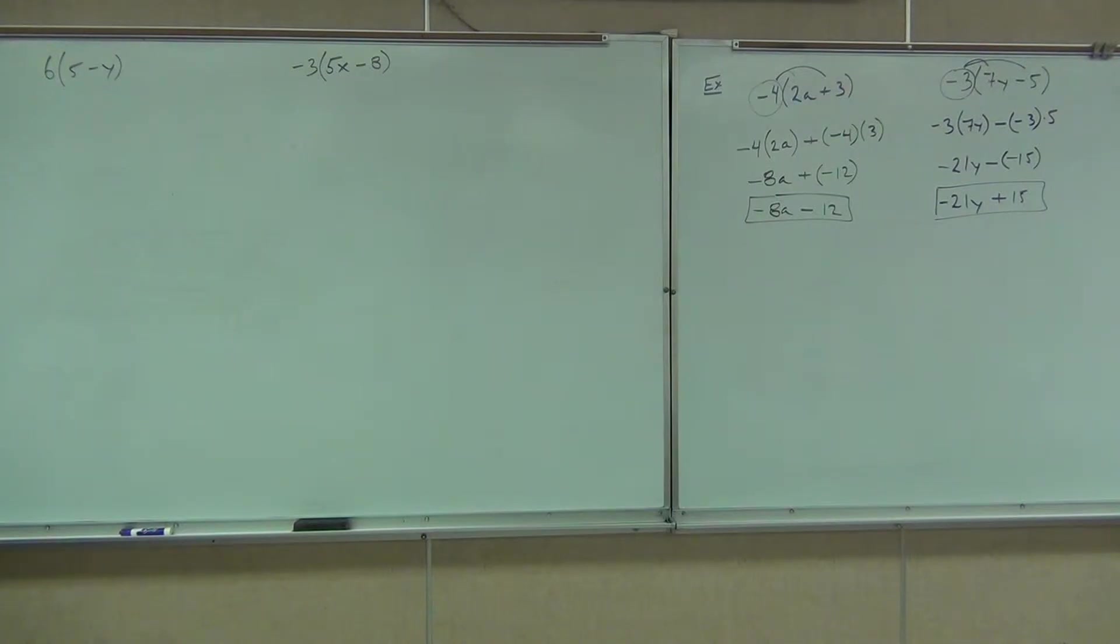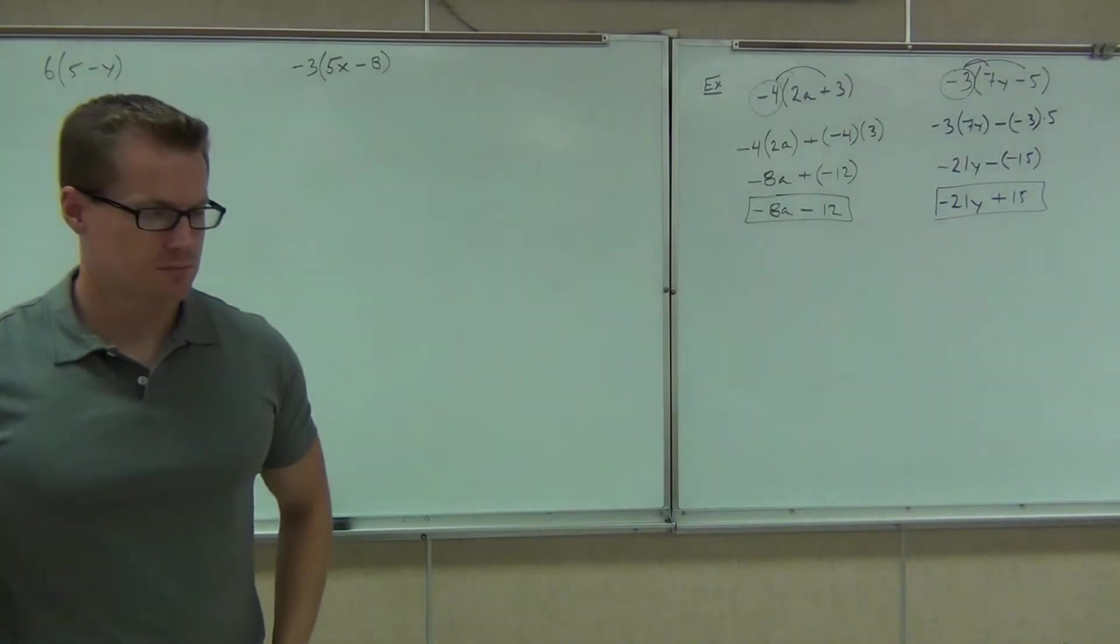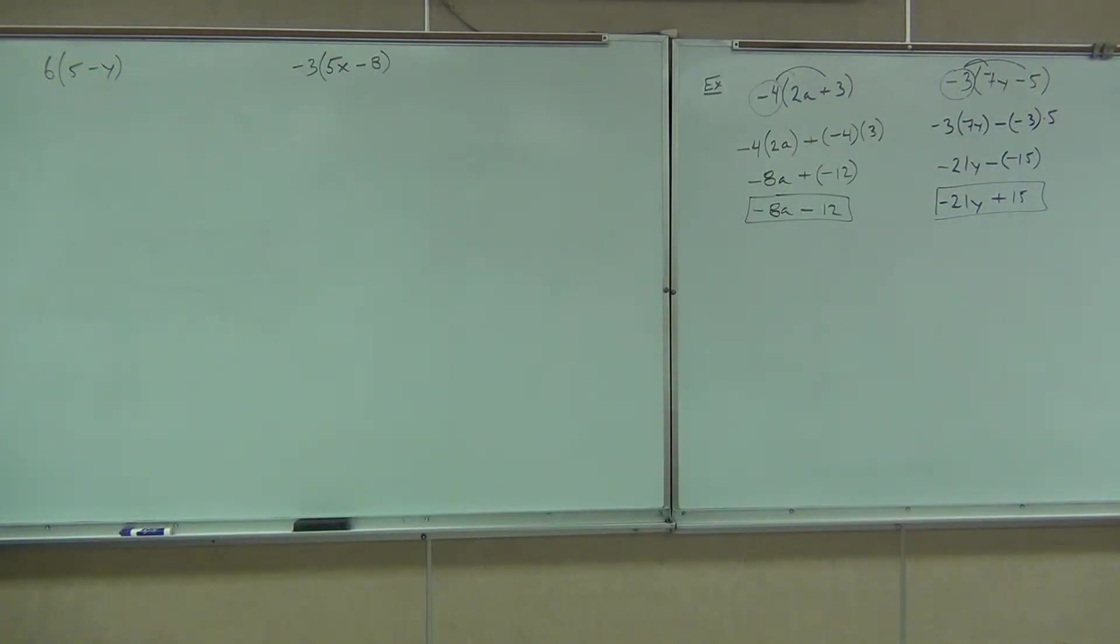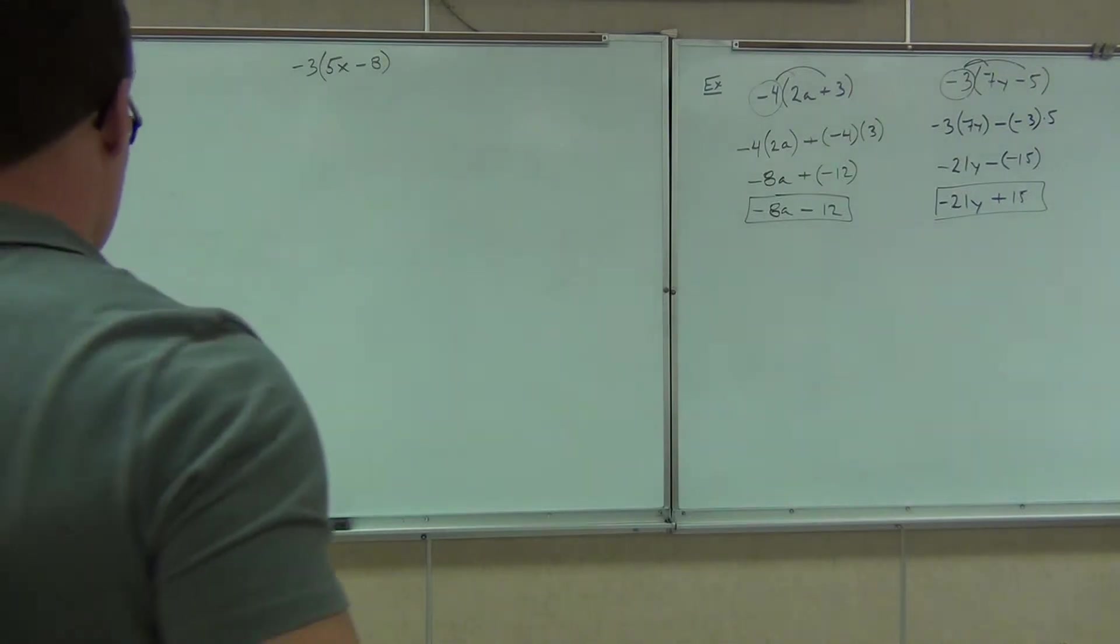Okay, there you go. Show me what you got. So we're taking the factor outside the parentheses with a sign times each of the terms inside the parentheses with their signs. As long as we multiply them with their signs, they'll take care of themselves. We don't even have to worry about it. It's kind of nice. So let's look at the first example.